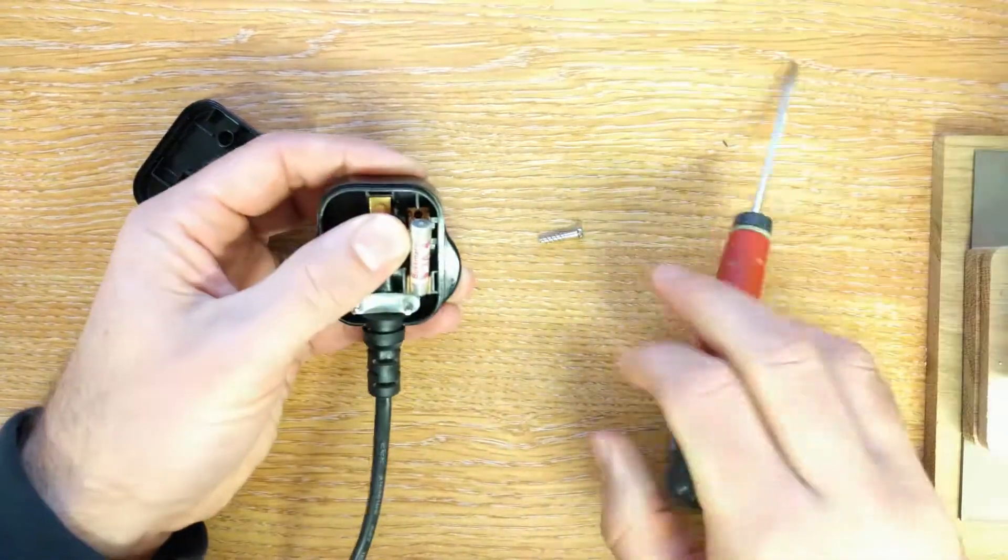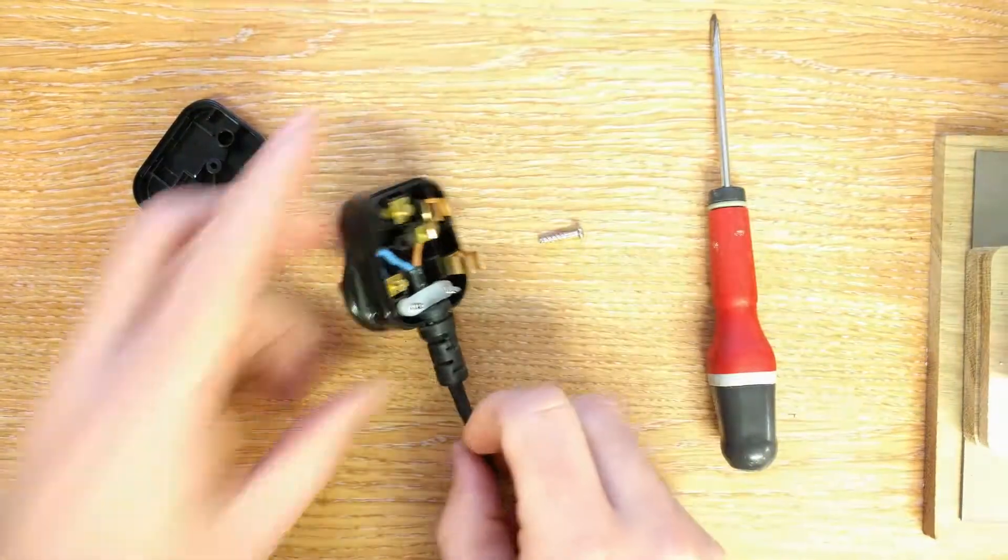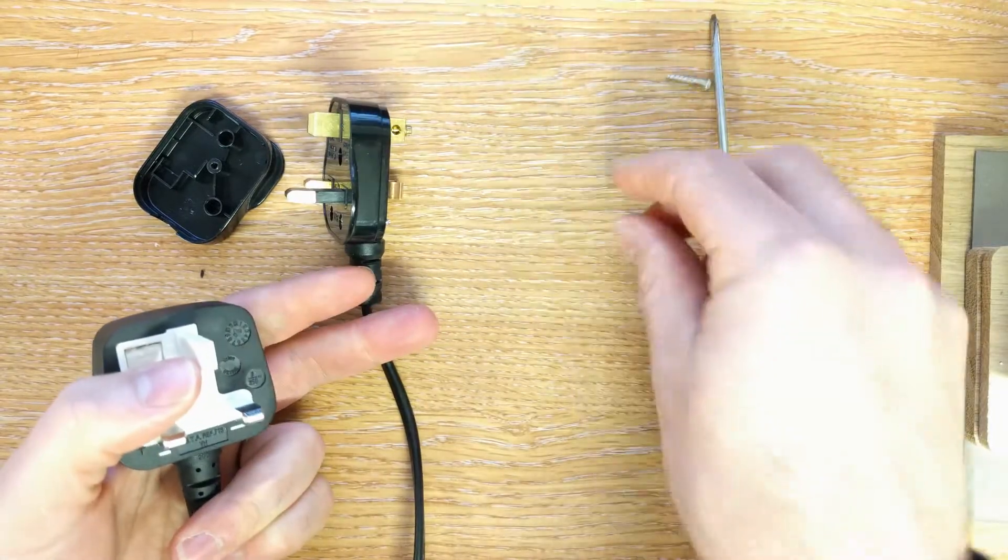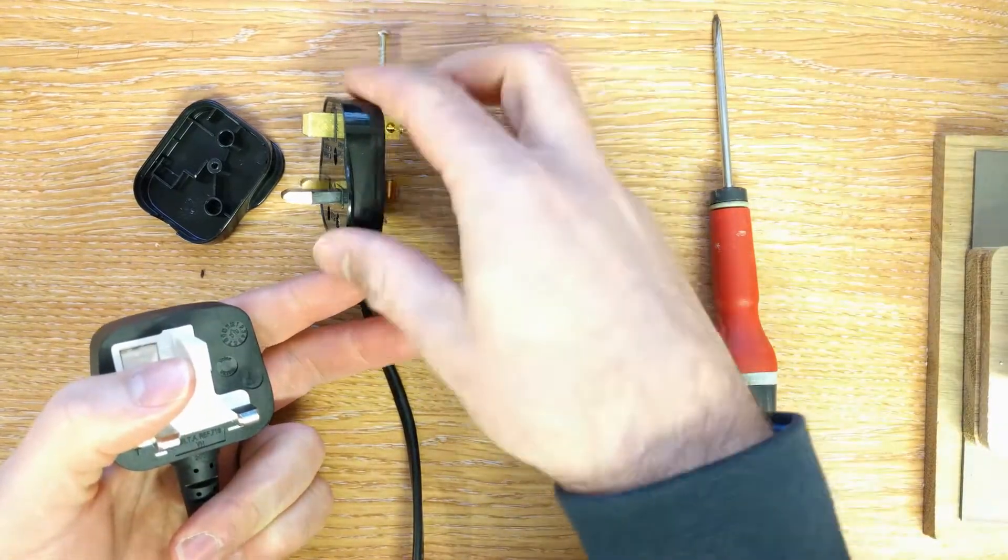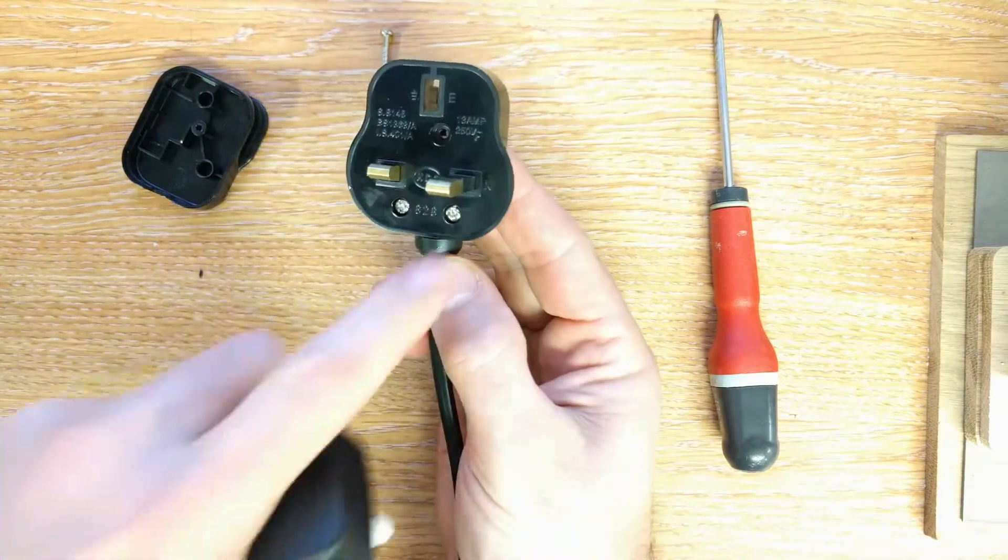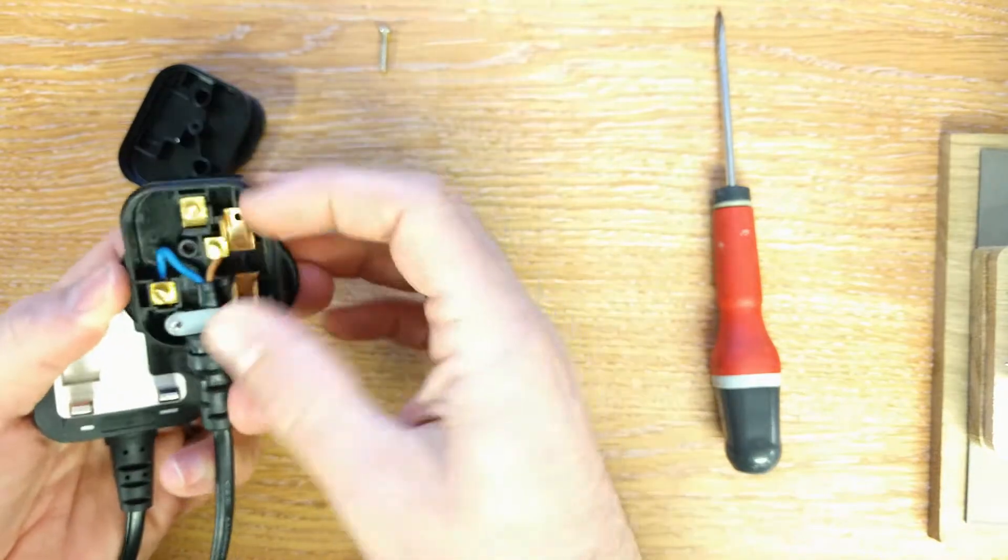So what I'm going to try and do is get the fuse out of here. You only need to undo the one screw on this type of plug. The other two screws are just holding in the wire. Don't worry if these fall out, you just shove them back in.